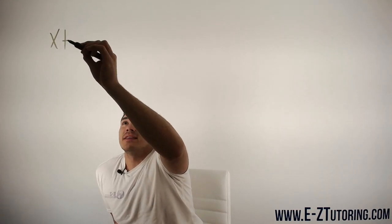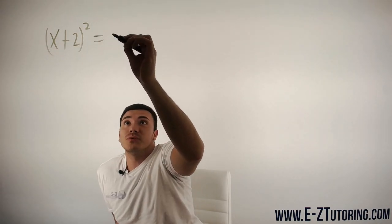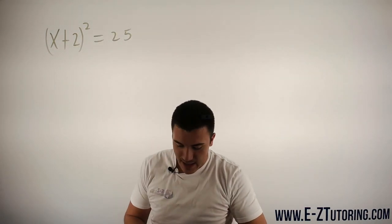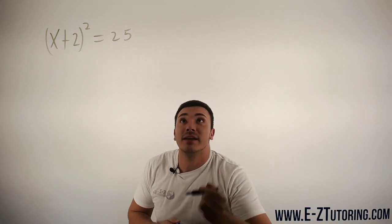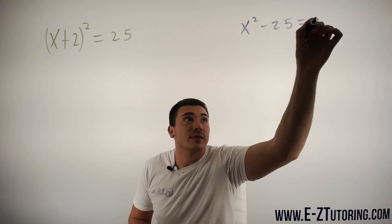So I'm going to solve two different types of equations here. Suppose the first one is (x+2)² = 25, and suppose that the second one is x² - 25 = 0.